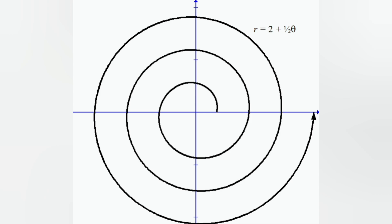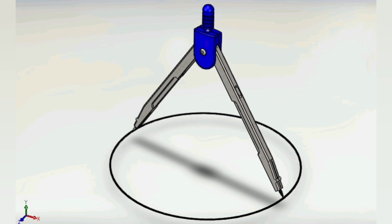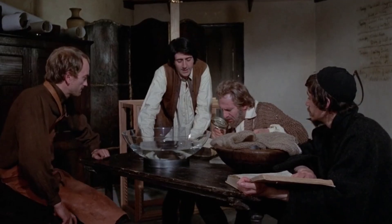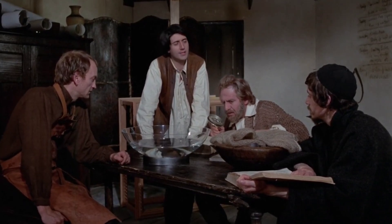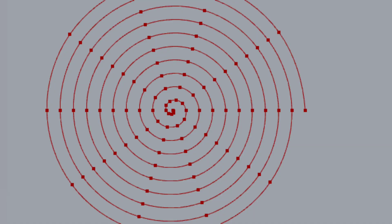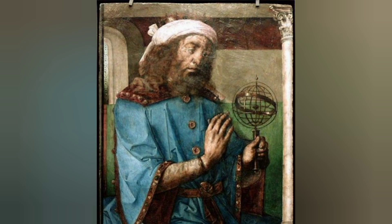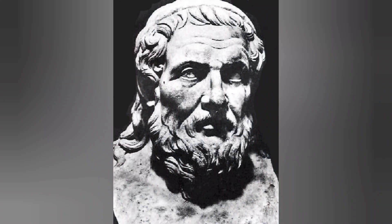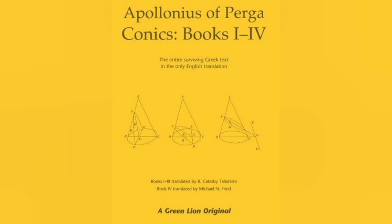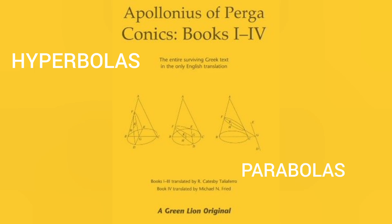Now the Archimedean spiral was created by Archimedes in the third century BC. As the story goes, he was fooling around with his compass — he pulled the legs of the compass out at a steady rate while rotating it clockwise. What he discovered was a spiral that moved out at the same magnitude to which he turned the compass and kept a constant distance between each revolution. Now, while it was created by Archimedes, Pappus of Alexandria states that the spiral was actually discovered by Conon of Samos, another Greek mathematician and friend of Archimedes.